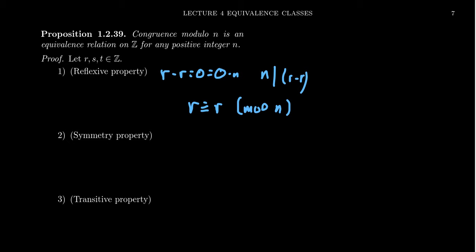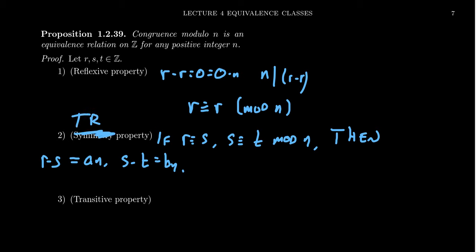To show symmetry - I'm doing the transitive property, aren't I? You can go out of order here. Transitive property. What am I doing? Oh well, we'll finish up with the transitive property. No big deal. If R is congruent to S and S is congruent to T mod N, then we see that R minus S is equal to A times N, and we also have that S minus T is equal to B times N.